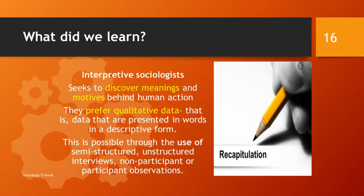Let us now see what we learned today. We were looking at the interpretive sociologist. First, we found that the interpretive sociologist seeks to discover meanings and motives behind human action. They prefer qualitative data — that is data which are presented in words, in descriptive forms. This is possible through the use of semi-structured or unstructured interviews, and non-participant or participant observations.